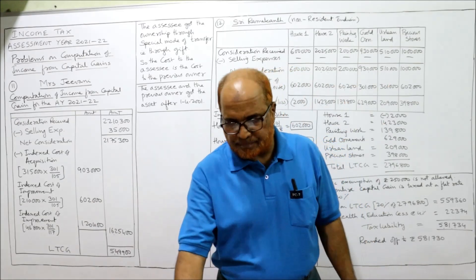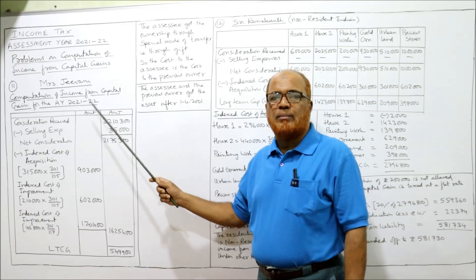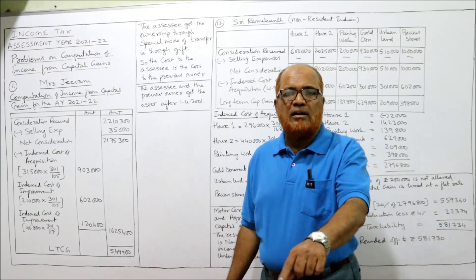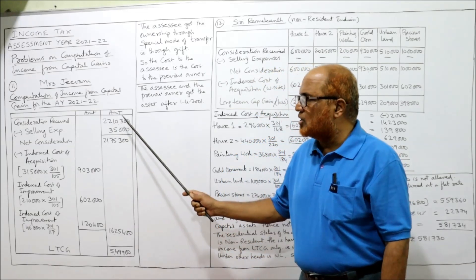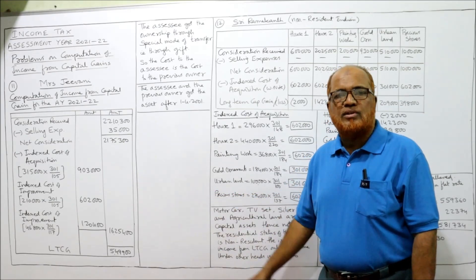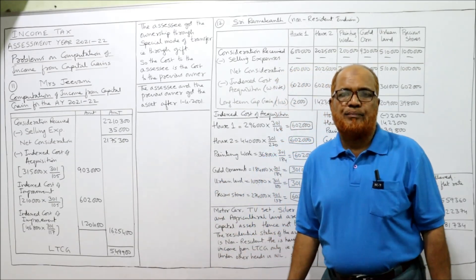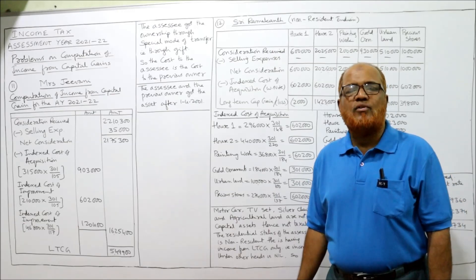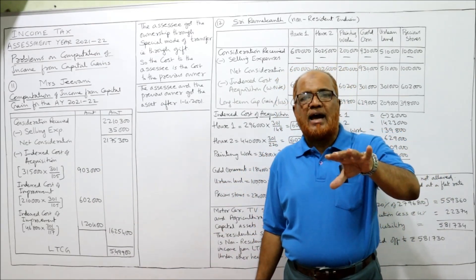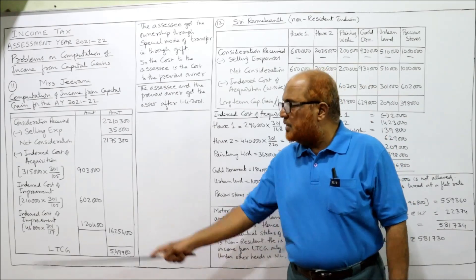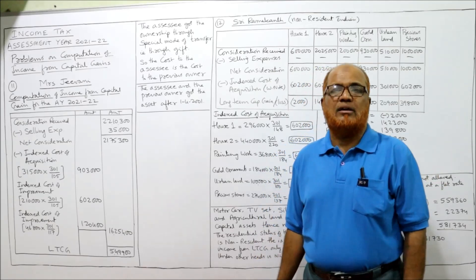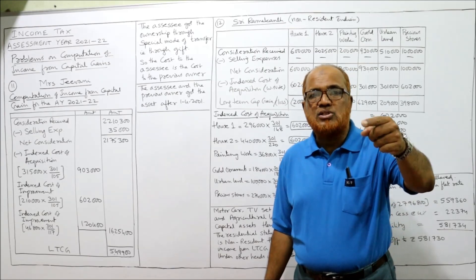Now see the solution carefully. Mrs. Jeevani — computation of income from capital gain for assessment year 2021-22. Consideration received: twenty-two lakh ten thousand three hundred. Deduct selling expenses of thirty-five thousand. Net consideration: twenty-one lakh seventy-five thousand three hundred. From this we deduct the indexed cost of acquisition. This property was acquired by Sri Kiran for rupees three lakh fifteen thousand, but Sri Kiran gifted it to Mrs. Jeevani, so the cost to Mrs. Jeevani is the cost to Sri Kiran.